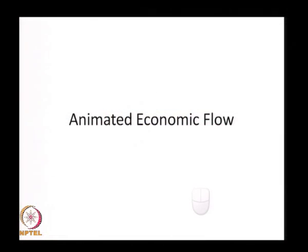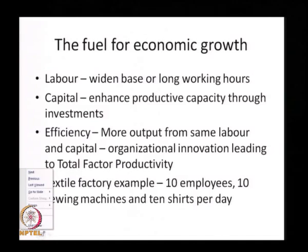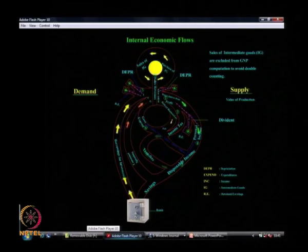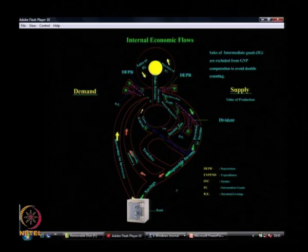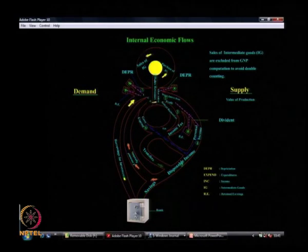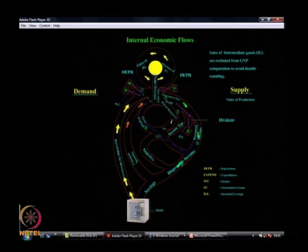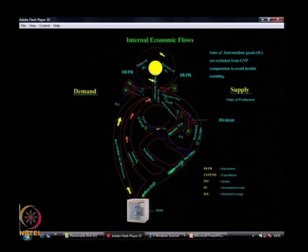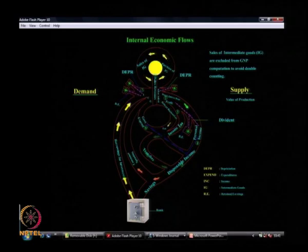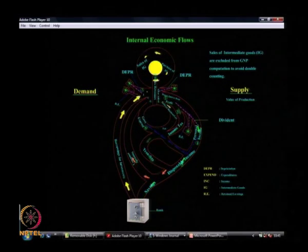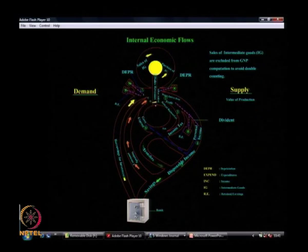I will give you a small economic flow illustration to understand what happens within a nation's economy. This animation illustrates a country's internal economic flows — it shows the relationship between the various elements in the economic value addition process and the expenditure components that come in the form of consumption, investments, and government spending. I will trace the path of this economic flow for you to understand it better.